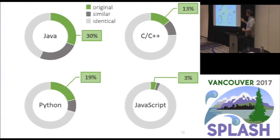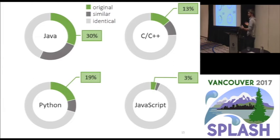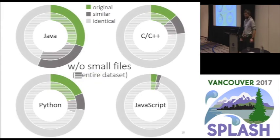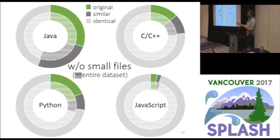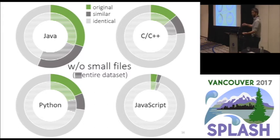One thought was that perhaps a lot of files are very small or trivial — like empty files. Maybe this only concerns tiny files. So what we did is, in the outer circle, we removed any files that had fewer than 50 tokens — which, after removing comments, whitespace, and separators, is actually a reasonably large file. As you can see, the proportions almost did not change.